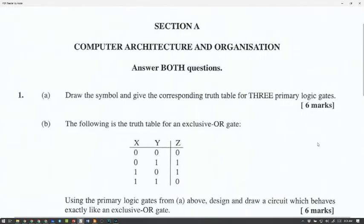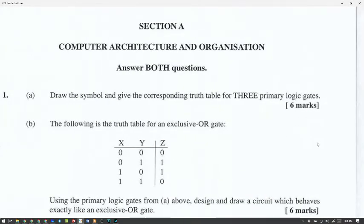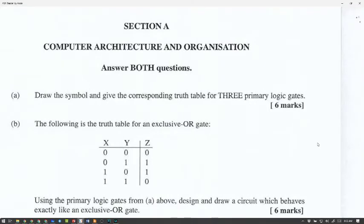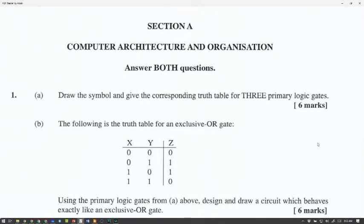Number one, draw the symbol and give the corresponding truth table for the three primary logic gates. The symbols are AND, this is an OR, and this is a NOT.